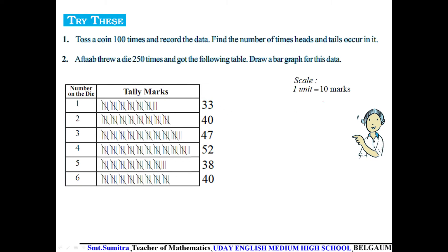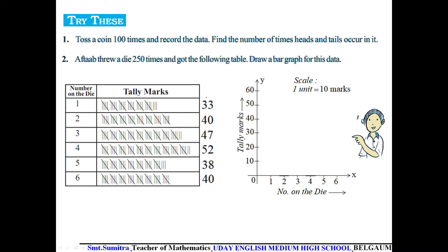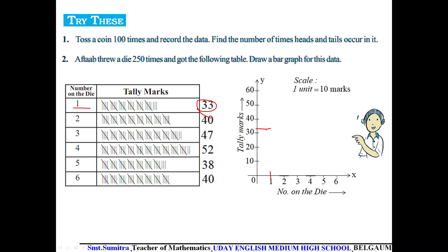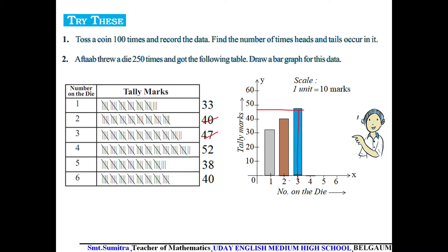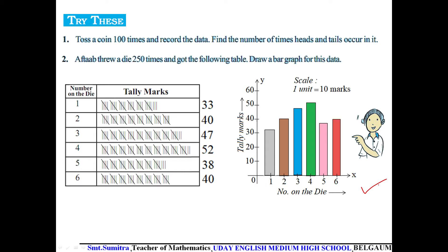To draw the bar graph, take a scale of 1 unit equal to 10, with the number on the die on the x-axis and frequency on the y-axis. Plot the bars: 1 is 33, 2 is 40, 3 is 47, 4 is 52, 5 is 38, and 6 is 40. This gives the complete bar graph.